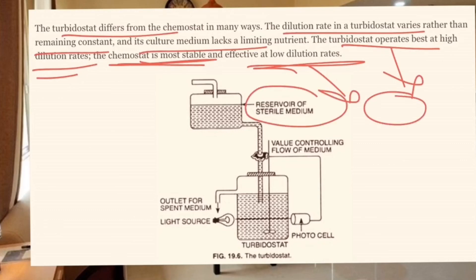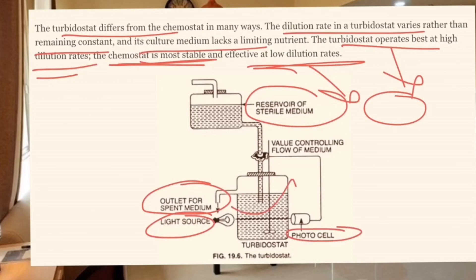The setup includes a reservoir of sterile medium and an outlet, with lights and photoelectric cells used to monitor the medium. We monitor how dilute and turbid the culture is, and as cells increase, we can monitor this using photoelectric sensors. This allows us to study bacterial growth culture and continuous culture types.